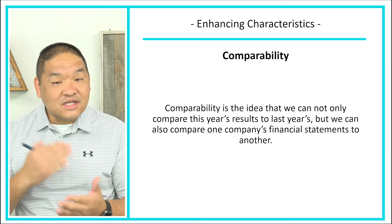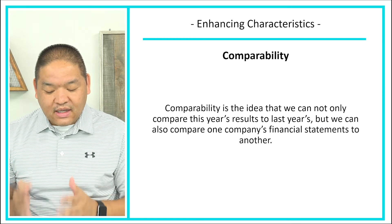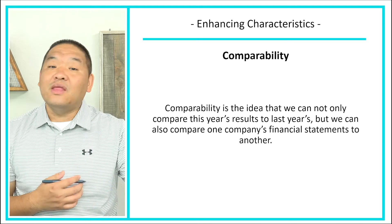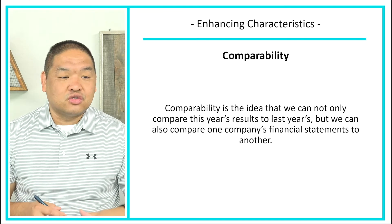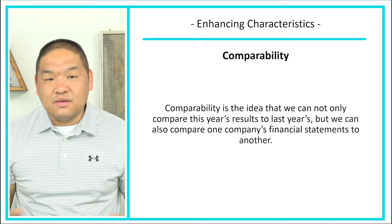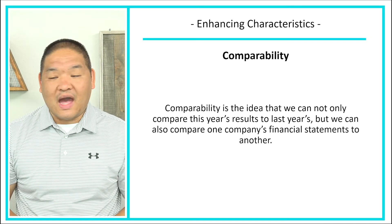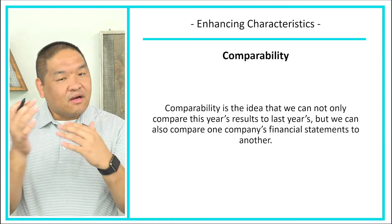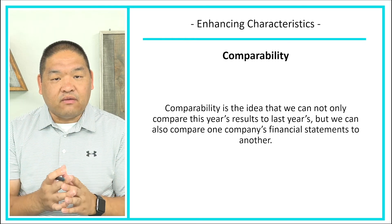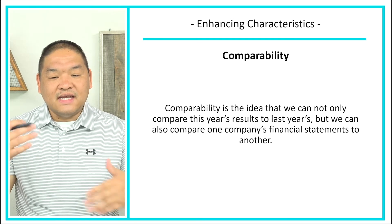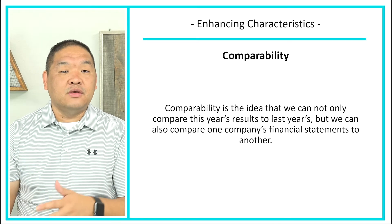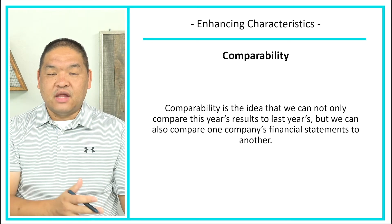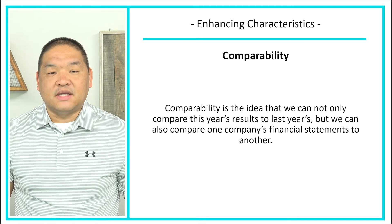The first enhancing characteristic is comparability. This is the idea that we can compare not only this year's results to last year's, but also one company's financial statements to another's. For example, can we compare income statements from competitors? We calculate revenue the same way under the accrual method. GAAP does allow some disparity — for instance, one company may use FIFO and another LIFO — but overall, comparability means the ability to compare one financial statement to another across companies or across years.